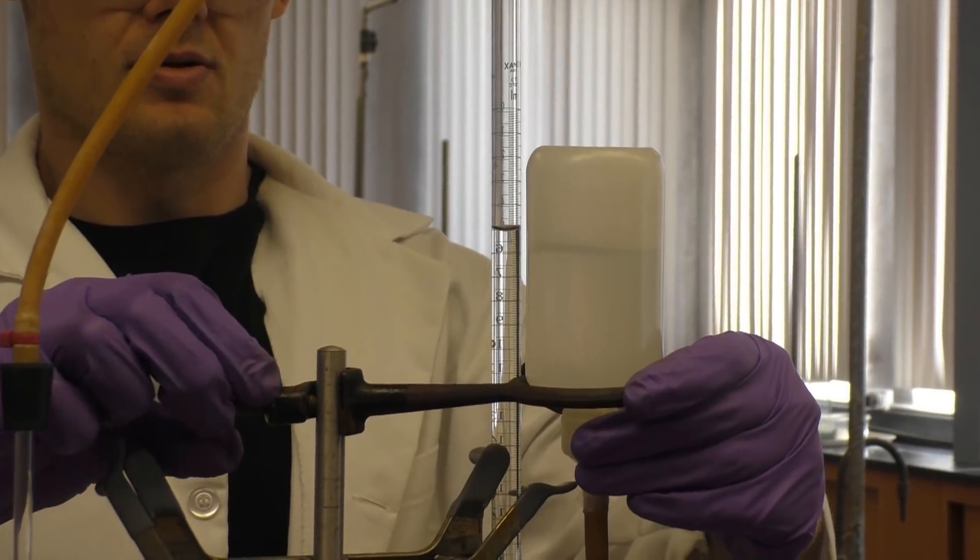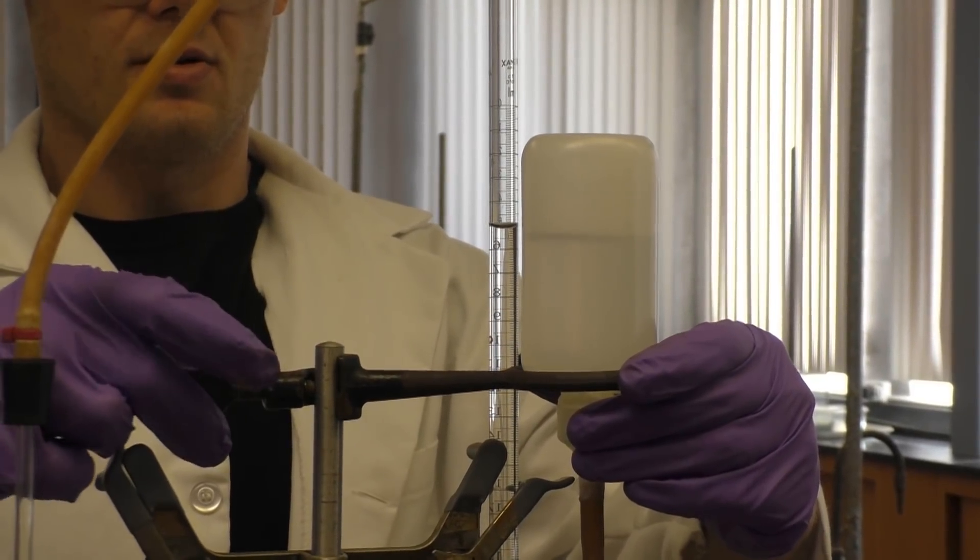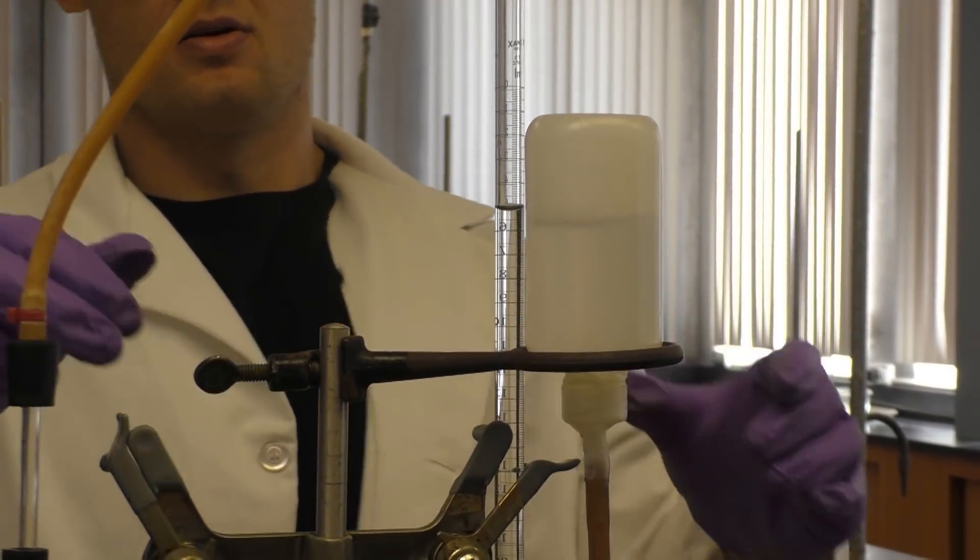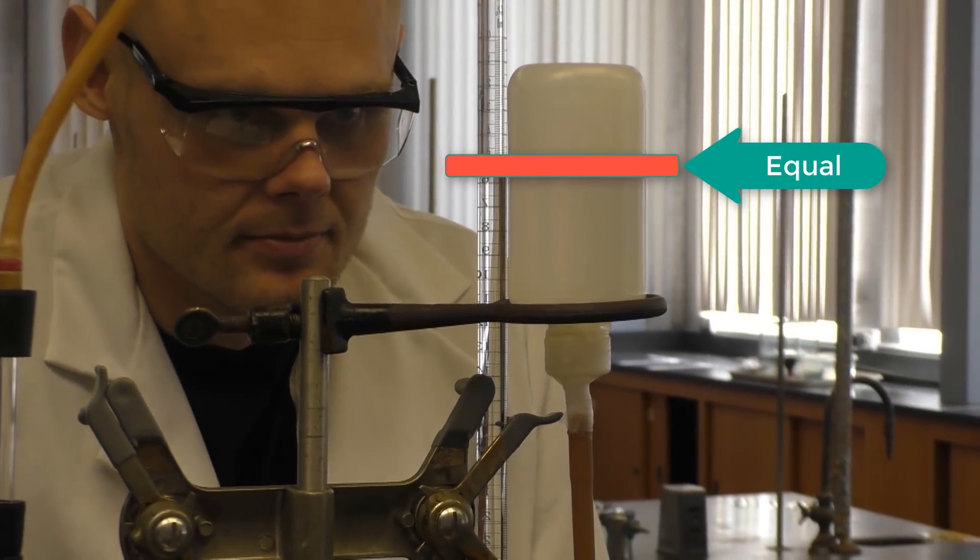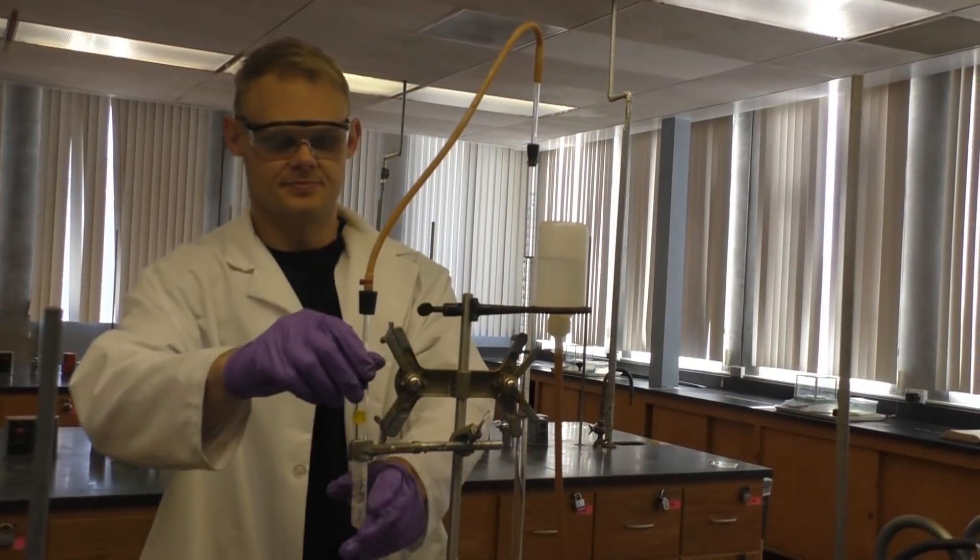You now must equalize the pressures again before you obtain your final volume reading. Thus, just lower your leveling bulb until its water level is equal to that in the burette and then write down the volume of the water in the burette to two decimal places.